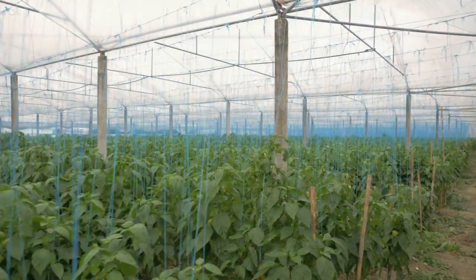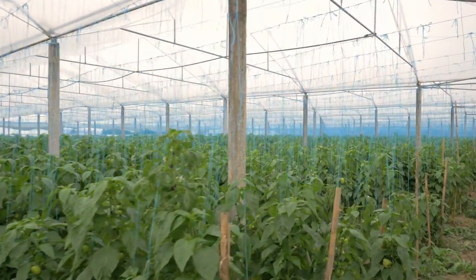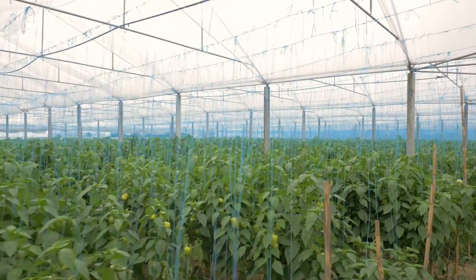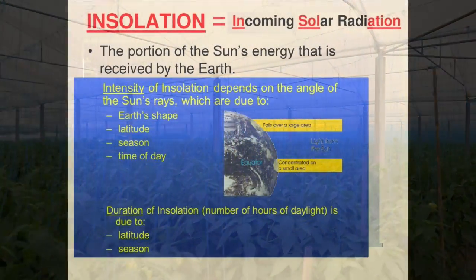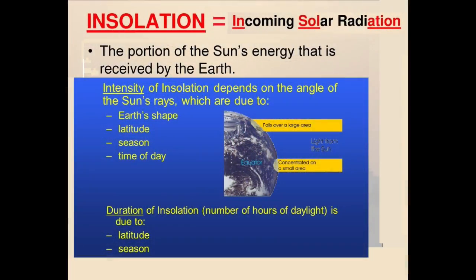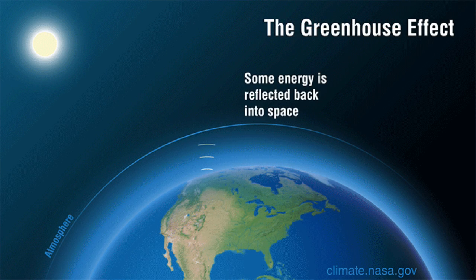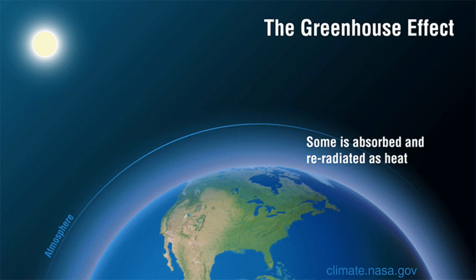That is what the greenhouse effect is — it's a natural process where the incoming solar radiation, also called insolation, comes through the atmosphere, hits the Earth, warms the Earth, bounces back, and is trapped by the Earth's atmosphere.